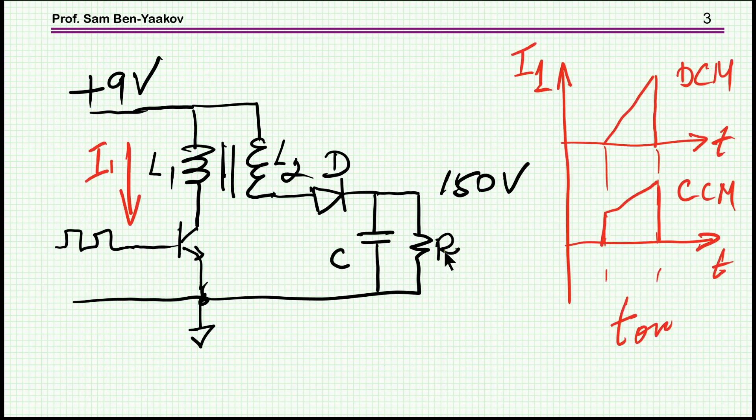If we look at what is happening here, when the transistor is on, we're going to have the current going up. If it's a DCM, it will be starting from zero. If it's a CCM, then it will be with some initial condition, then it will go up.